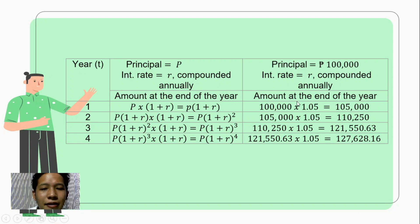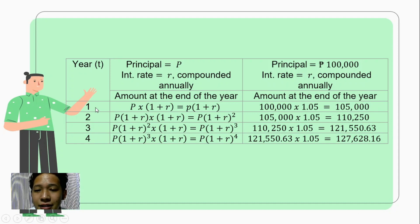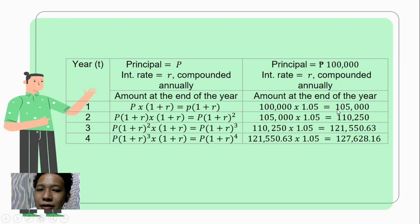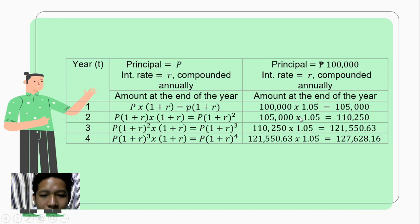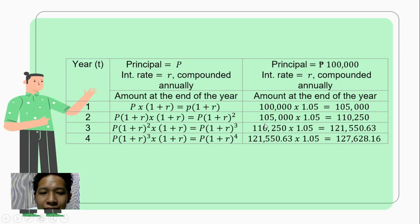It's easy to determine if simple or compound because there's a word 'simple' and a word 'compound.' Your time is four years. With simple interest, you compute it once; but with compound interest, you compute it yearly. After one year, your money — with a principal of one hundred thousand — would be one hundred five thousand pesos. This maturity value after one year becomes your principal for the second year, multiplied by another five percent, yielding one hundred ten thousand two hundred fifty.